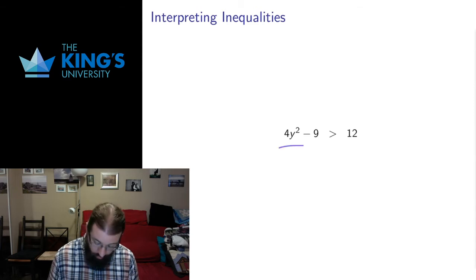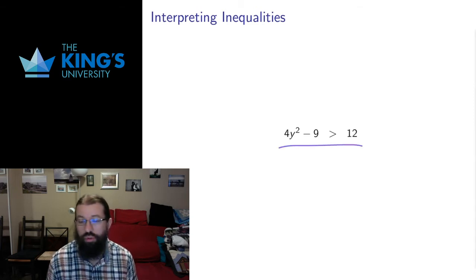So this inequality is asking what range of numbers, when we square them, multiply by 4 and subtract 9, end up larger than 12. And I expect to not only get one or two numbers that satisfy this, but a whole infinite range of numbers that work.